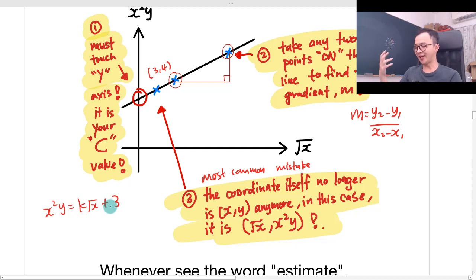Let's say you want to find K and you have a coordinate (3, 4). Most common mistake for students is they will sub the 3 into X and 4 into Y. They will do something like 3 square 4 and then this is K square root 3 plus 3, which is wrong.